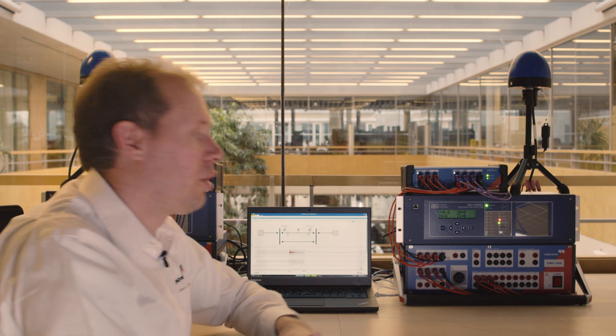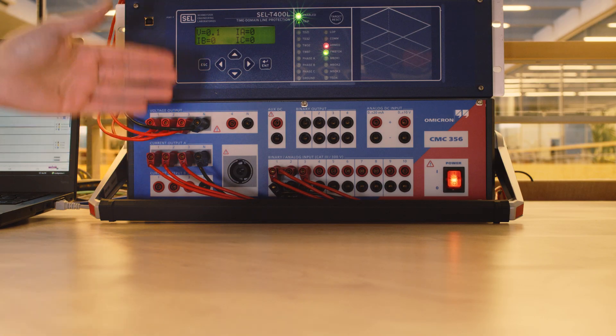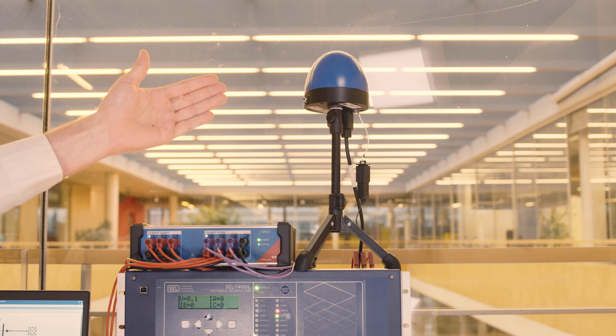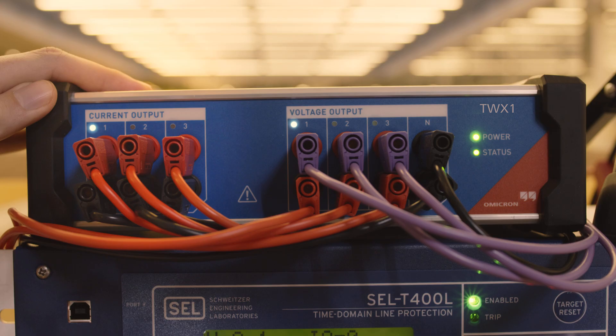At each end you need a CMC, a CMGPS 588, and a device that can superimpose the travelling wave pulses onto the currents and voltages.